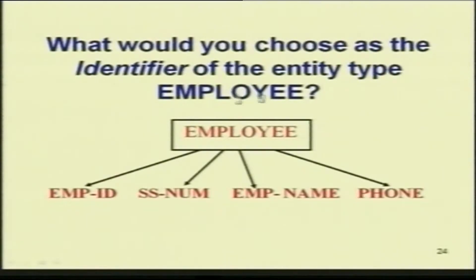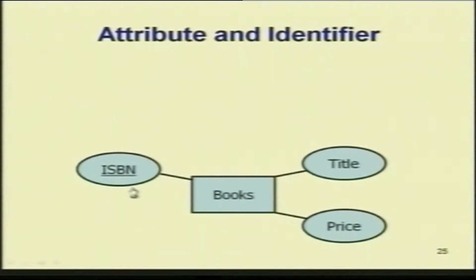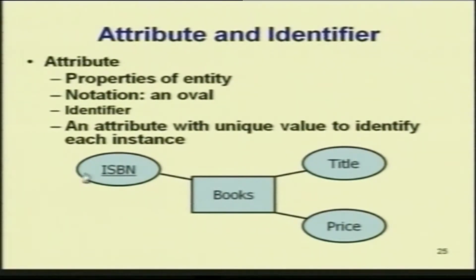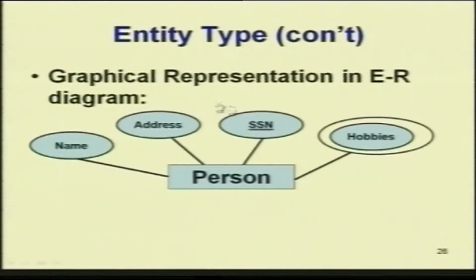What will you choose as the identifier of the entity type employee? Employee ID, SSN number, employee name, phone — employee ID is the best choice. In many cases in databases, you introduce a new attribute with a unique ID so that you can have a key. For example, books with ISBN, title, and price — ISBN can be the primary key. In ER notation, the entity is represented by a rectangle and attributes by ovals. The identifier or key is represented with an underline to indicate it is the key.